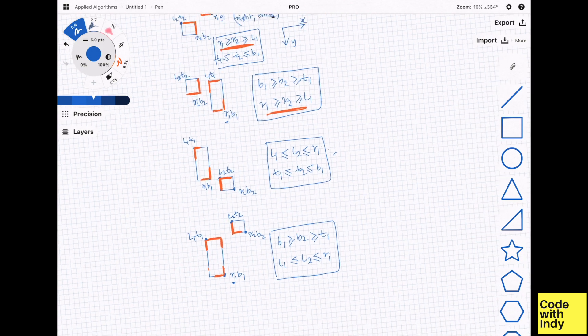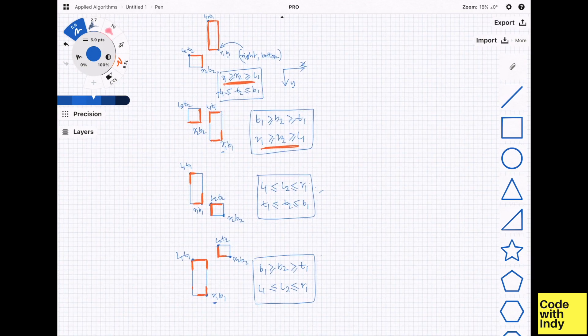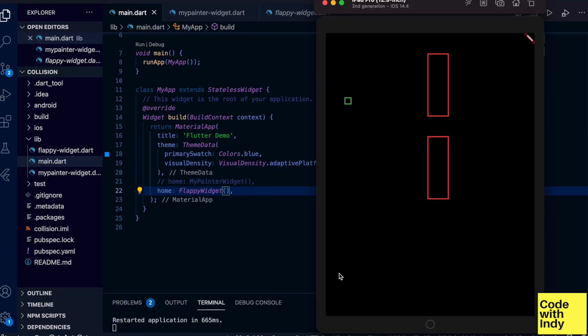So, we came up with all these scenarios that can cause a collision. You may already see that some of these conditions are redundant. But we can optimize these things when we get to the code. Okay, let's jump to the code now.